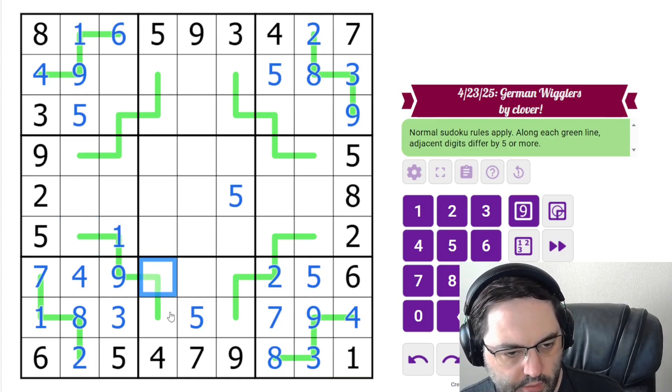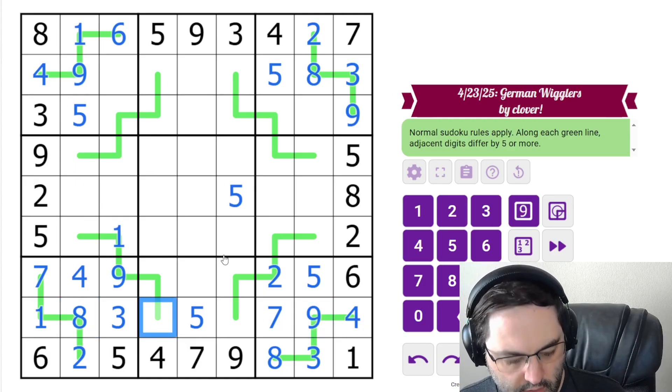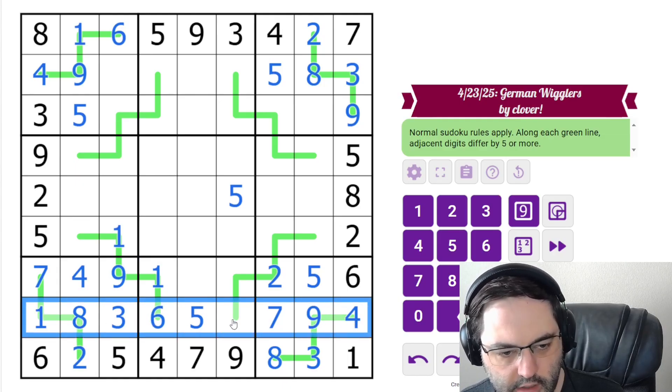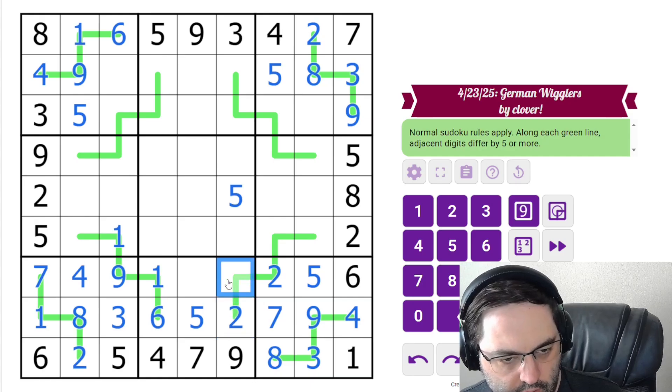This must be a 1 or 3. It can't be 3 because of the 8 and the 9 here. So this must be 1. And then the only digit in the row, the high digit, is a 6.